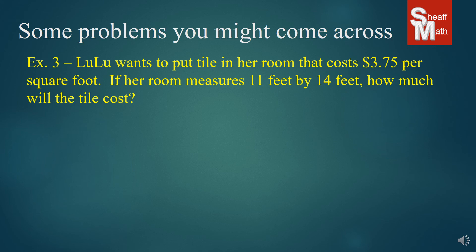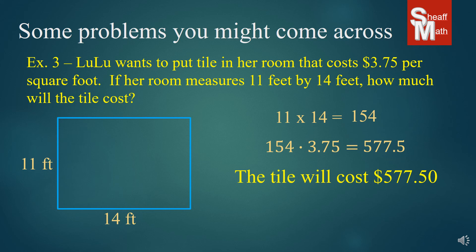The last example here says Lulu wants to put tile in her room that costs $3.75 per square foot. If her room measures 11 feet by 14 feet, how much will the tile cost? So here is her room measured. It's 11 feet by 14 feet, and we have to do a couple things here. First, we have to find the area of her bedroom, and that's 11 times 14, which is 154. Then what we're going to do is, since each one of those square feet, the 154 costs $3.75 each, we're going to have to multiply 154 times 3.75, and I get 577.5, which converted to money makes $577.50.